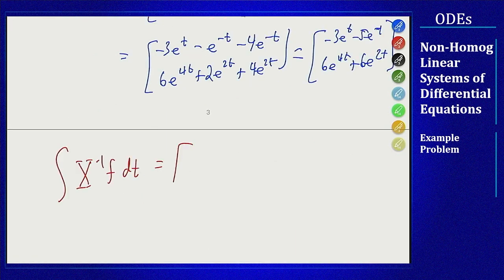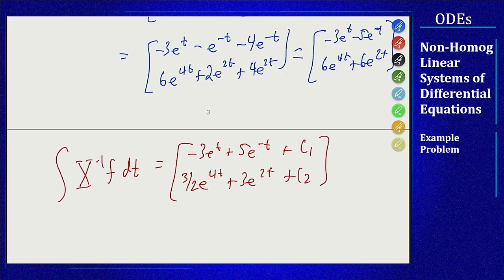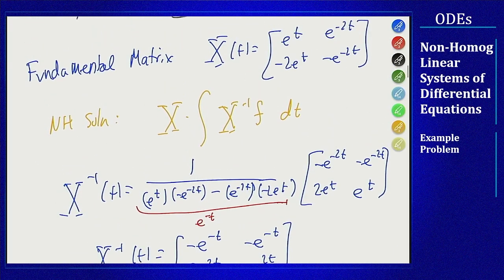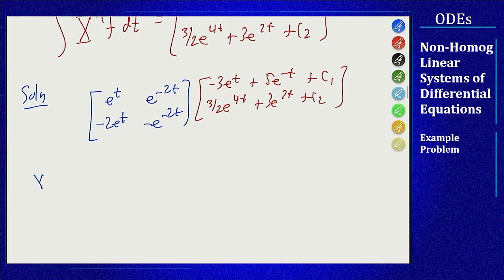Now I integrate that. This is a normal term-by-term integration here. Minus 3 e to the t plus 5 e to the minus t plus c1, 3 halves e to the 4t plus 3 e to the 2t plus c2, and then I multiply this by my matrix x to get my answer. And x we had before, e to the t e to the minus 2t minus 2e to the t minus e to the minus 2t. And this will give us our solution x.